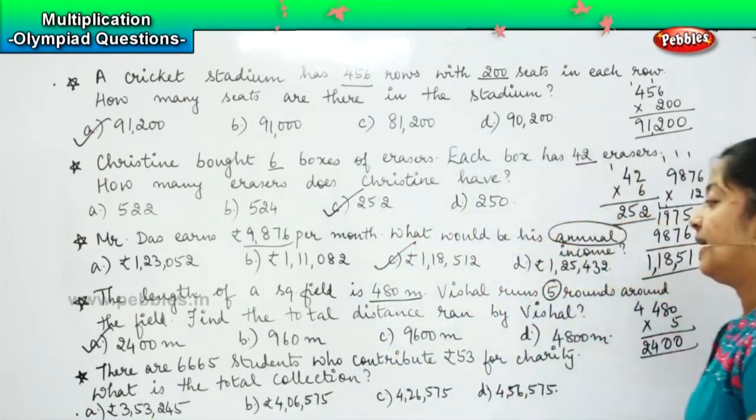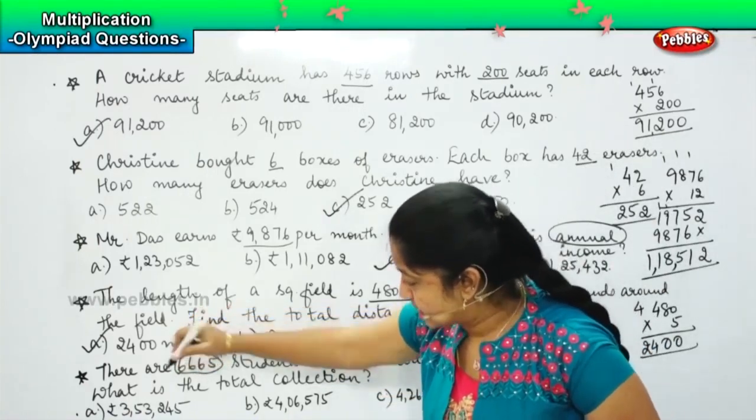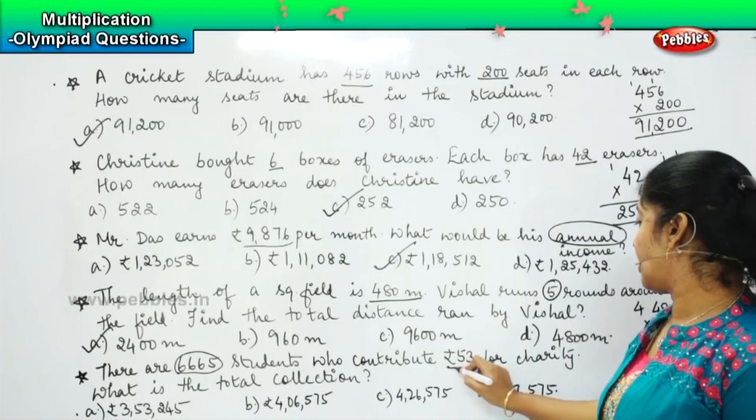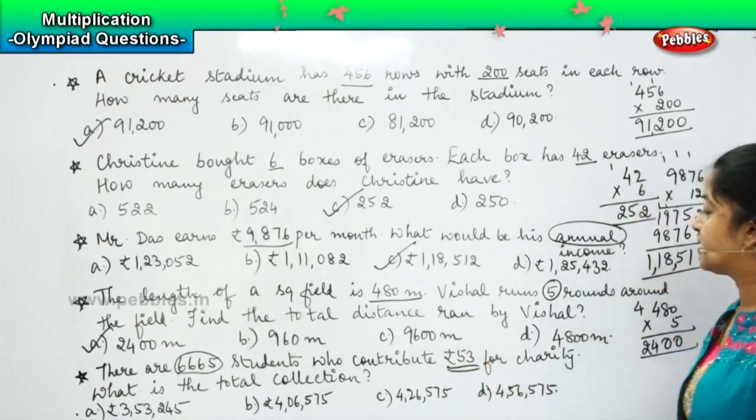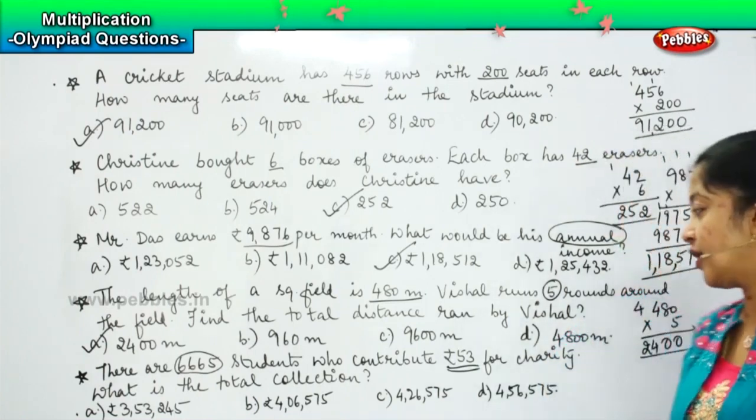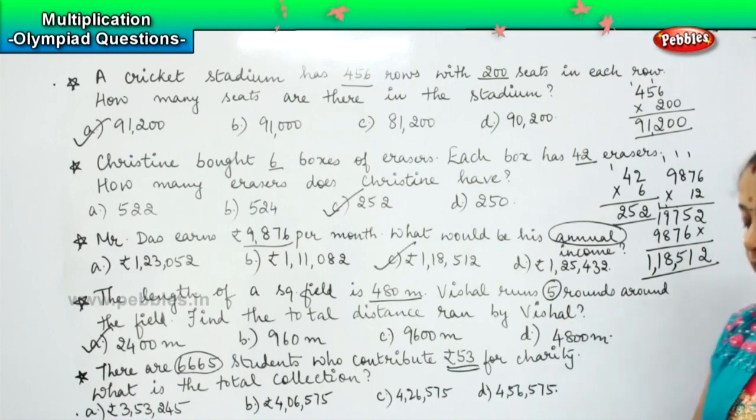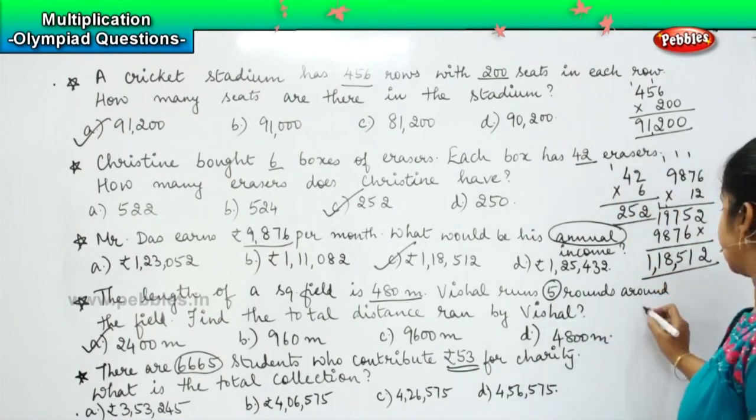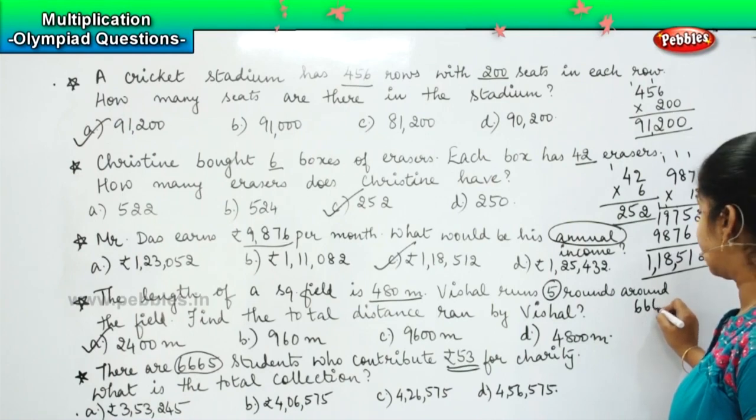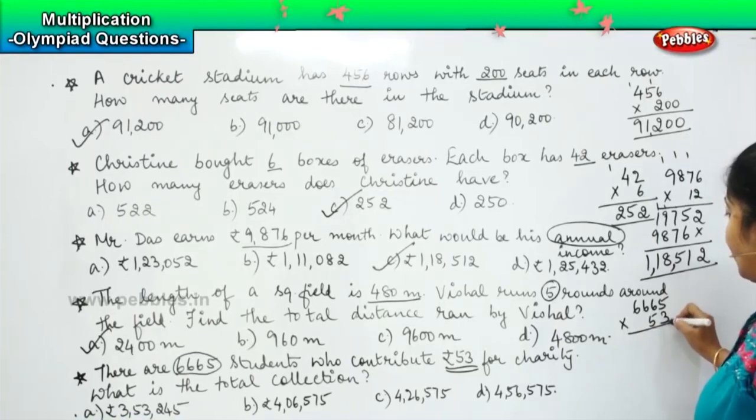There are 6665 students and everyone is contributing 53 rupees for the charity. So what will be my total contribution? What should I do, children, here? I will be multiplying it again. Right? So let us see, 6665 into 53.